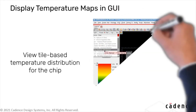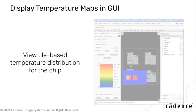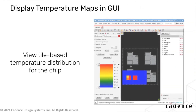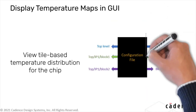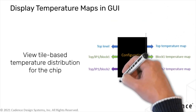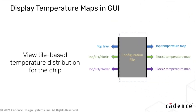Users can now seamlessly view tile-based temperature distribution for a chip. This feature is enabled by loading a configuration file that contains the mapping between the hierarchical blocks with corresponding layer-based temperature map files generated by Celsius, our system-level thermal analysis tool.